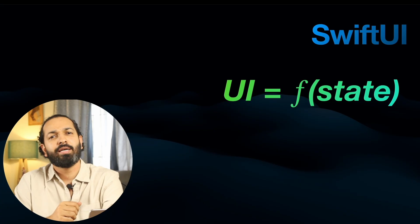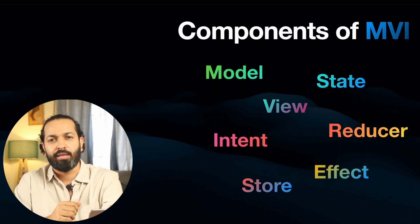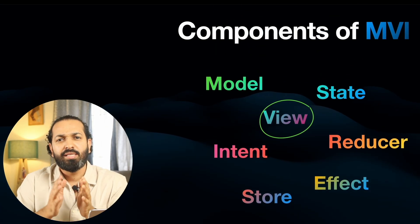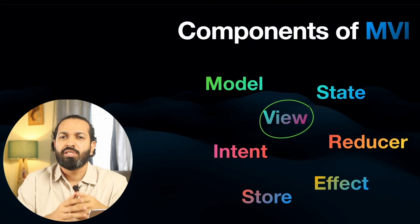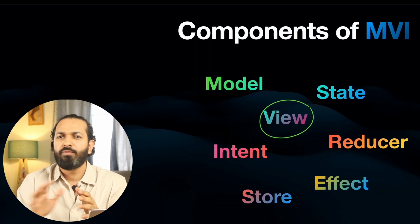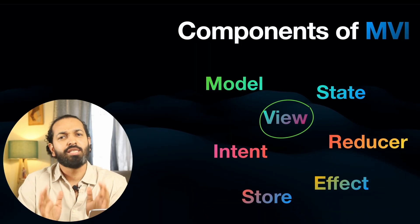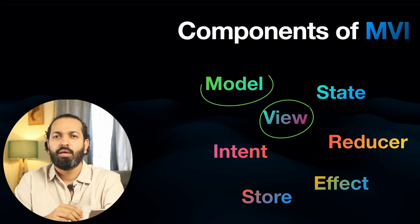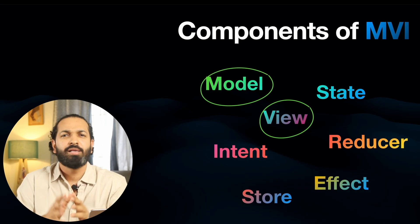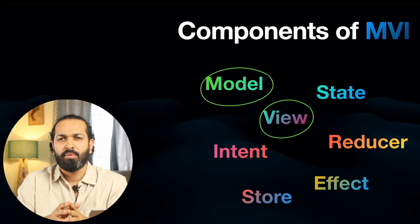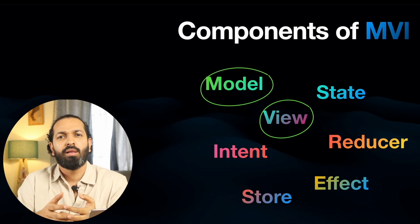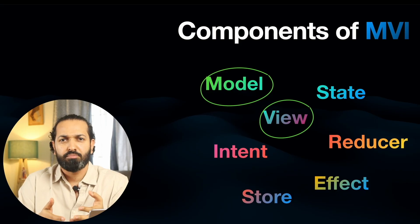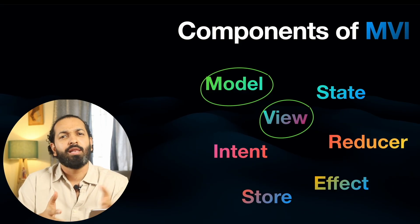Now let's understand MVI in detail. Starting with the view — this is exactly how it was in MVVM, your SwiftUI view, nothing changes there. Next, the model — this is also the same as in MVVM, the domain entities. For example, a restaurant, a user, a booking — that's the model. And in MVI, these models are contained in the state.